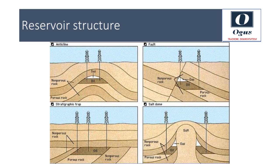Masses of salt are pushed up through sedimentary rocks due to their greater buoyancy, eventually breaking through and rising towards the surface. Salt is impermeable, and when it crosses a layer of permeable rock in which hydrocarbons are migrating, it blocks the pathway in much the same manner as a fault trap. So the wells are drilled on the sides of the salt dome.